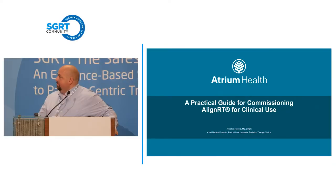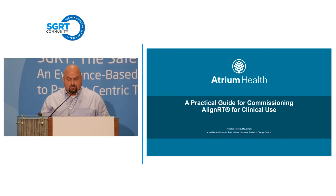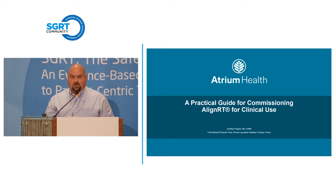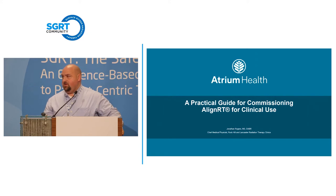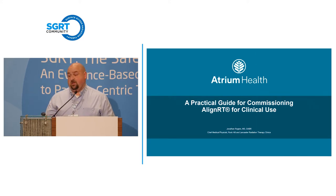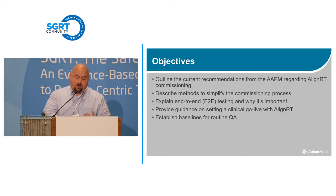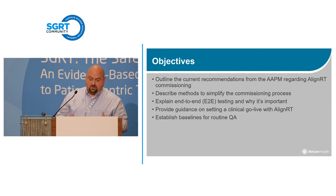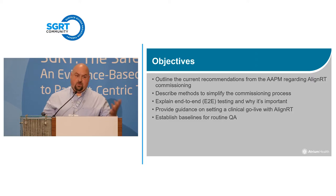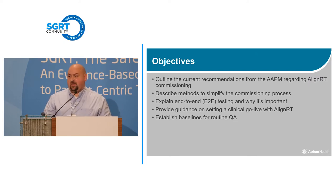We're talking about a practical way to commission a system. You can get into task groups and all that, but the best thing is to characterize your clinical use of the system — test things you're actually going to use clinically. That makes your testing a whole lot easier if you quantify it. We are going to go through the AAPM recommendations of what you should do, and this is going to be heavily guided by end-to-end testing.